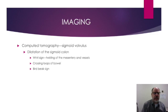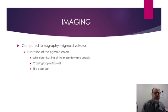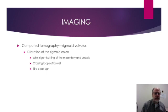Now let's talk about computed tomography findings of sigmoid volvulus. Similar to the radiographs, you will see dilatation of the sigmoid colon. More specific findings on CT that allow you to make the diagnosis of volvulus include a whirl sign, where you will see twisting of the mesentery and vessels about the sigmoid colon. You will see the two loops of bowel cross, and there will be an abrupt pointed tapering of the crossing loops — what is termed the bird beak sign — indicating an abrupt luminal narrowing.